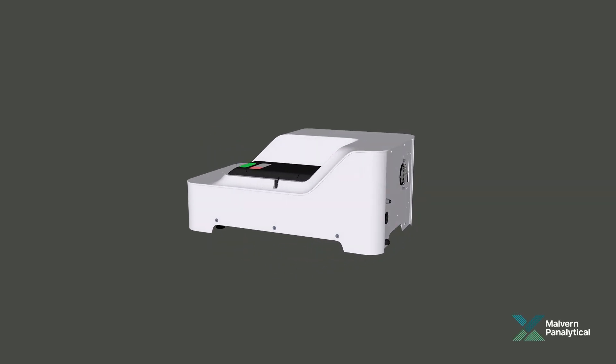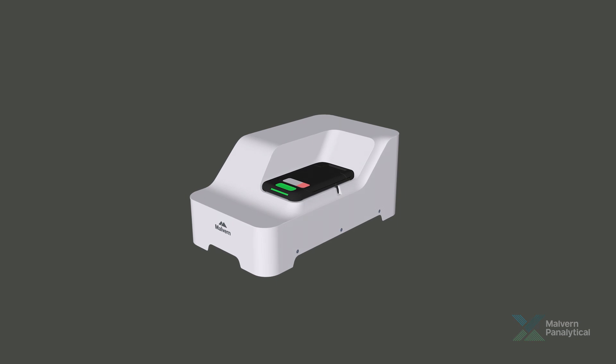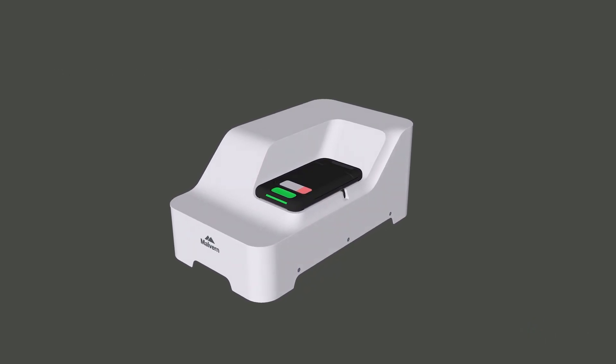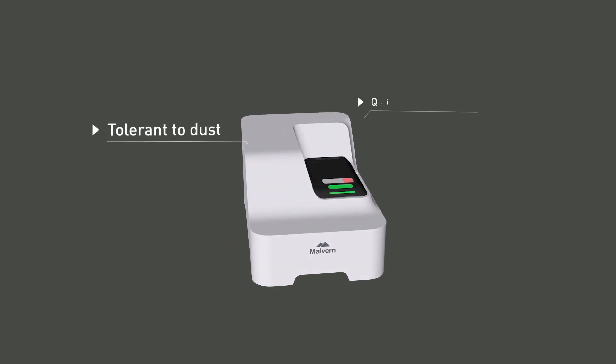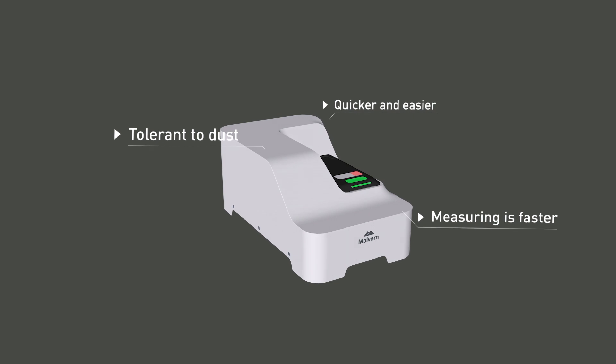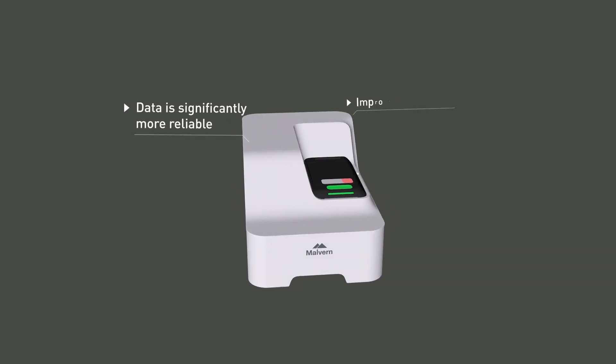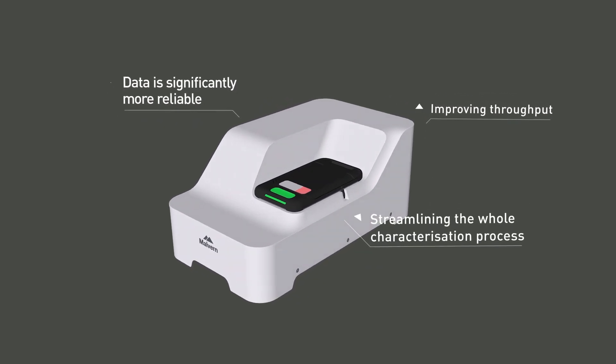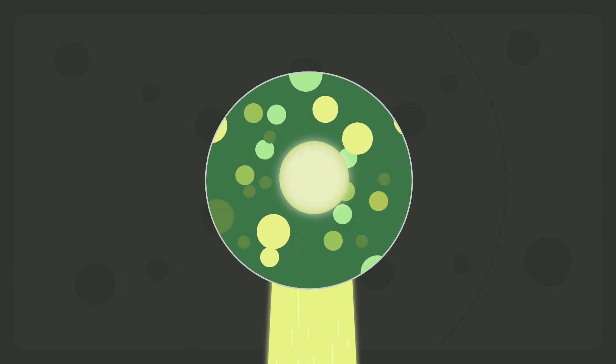Adaptive correlation is a patented technique that is only available with Malvern Panalytical's new Zetasizer Pro and Zetasizer Ultra. By making measurements more tolerant to dust, sample preparation becomes quicker and easier, measuring is faster, and the data is significantly more reliable, improving throughput and streamlining the whole characterization process. It also gives more insight into the presence of aggregates or other oversized particles within a sample.